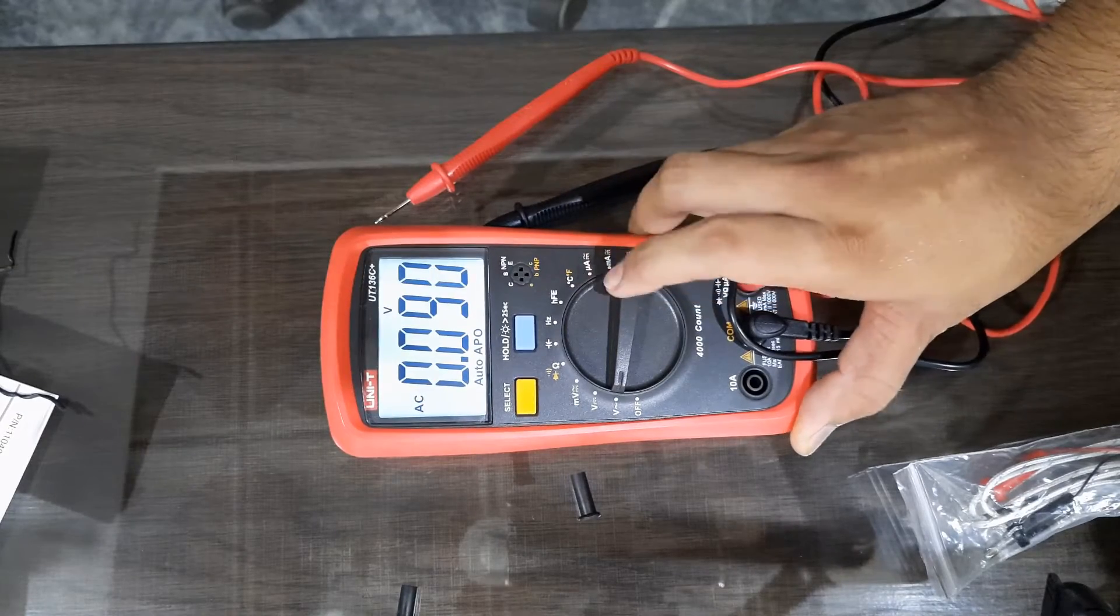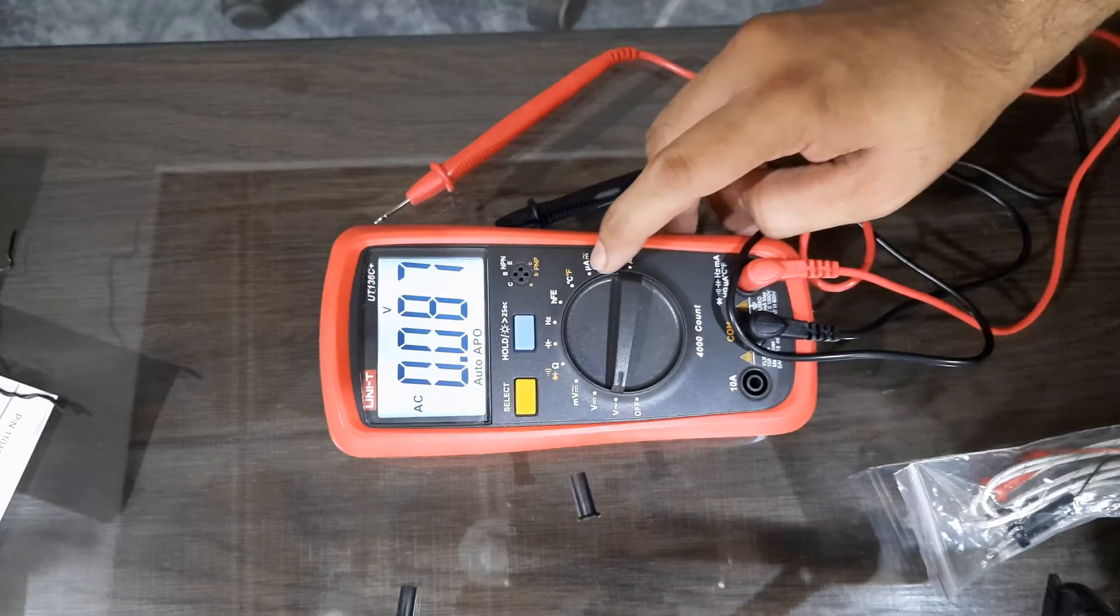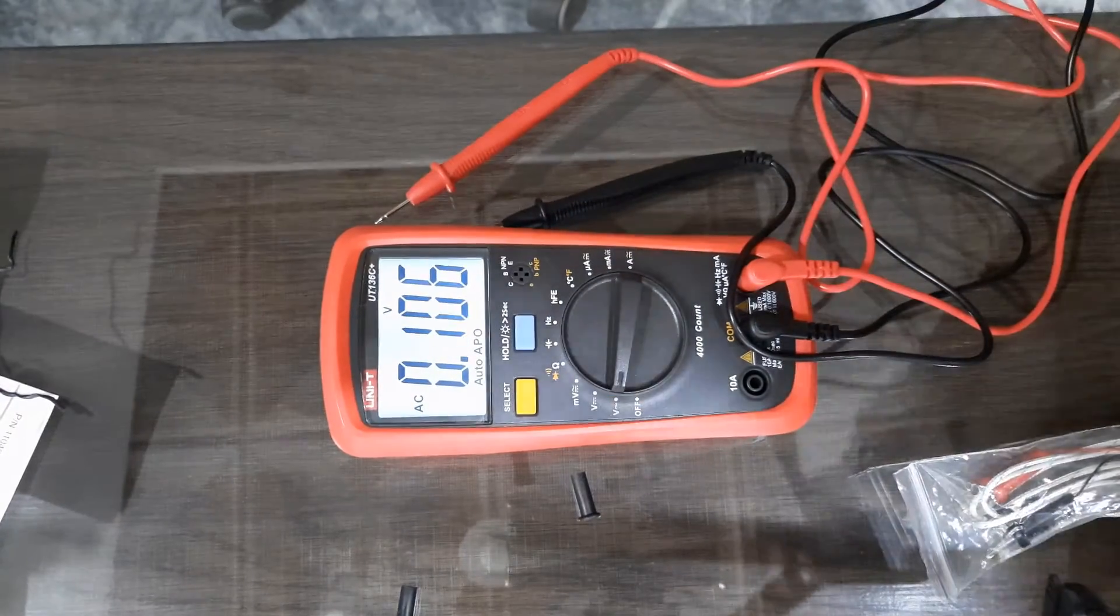Temperature in Celsius and Fahrenheit, microamps, milliamps, amps AC-DC. These are the AC-DC ampere settings.